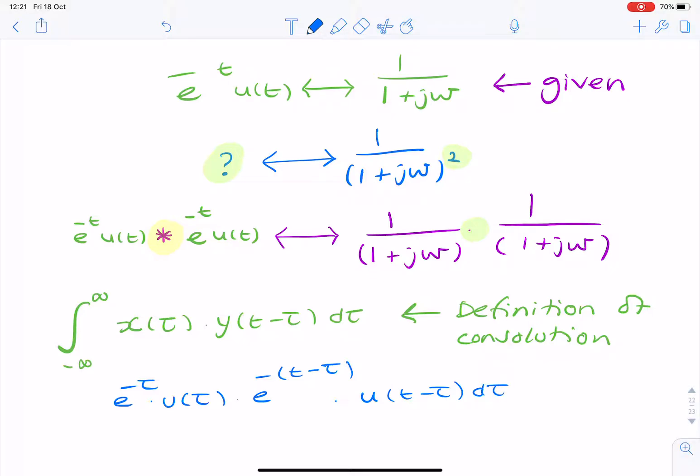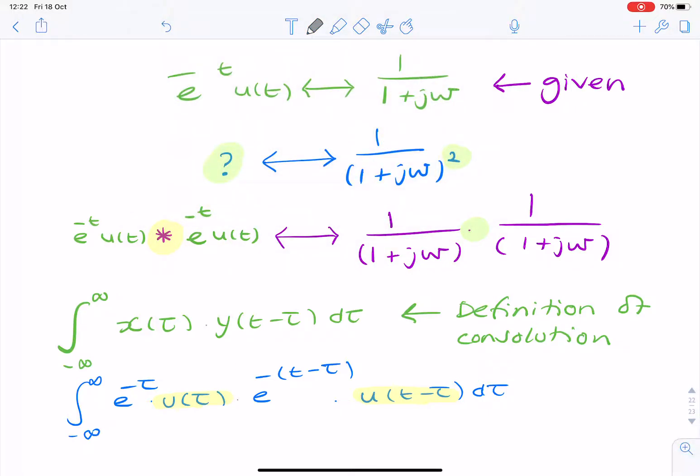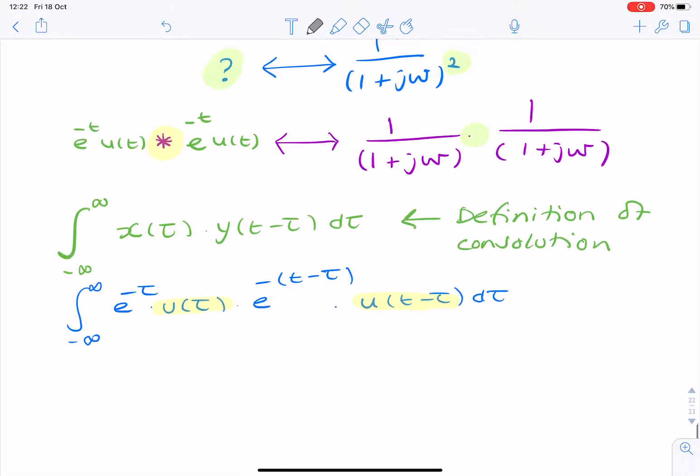Now, we're integrating over tau and not time. So, watch out for that. Now, that looks like a huge integration, but actually we have these two unit steps. And a unit step, remember, what it does is it changes the limits for our integration.